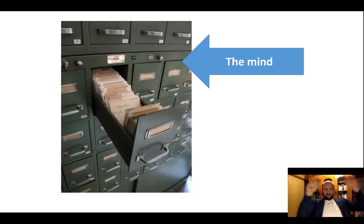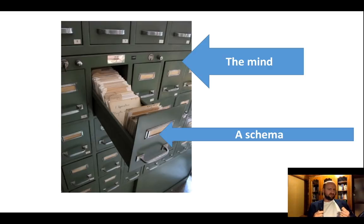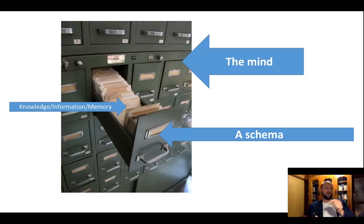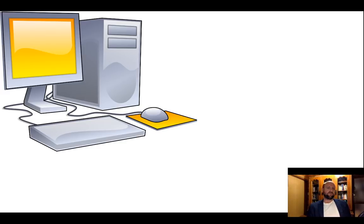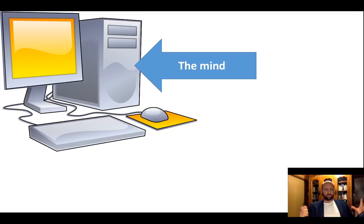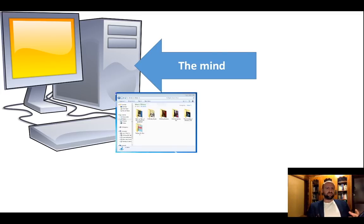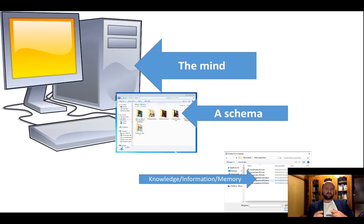A useful metaphor is a filing cabinet: the whole cabinet is the mind — all our experiences, life histories, memories, and knowledge — and one particular file is a schema, a group of related pieces of information. A more modern metaphor is a computer hard drive: the hard drive is the mind, the folders are the schemas where different individual files of information are grouped, and the individual files are the specific pieces of knowledge and memory.